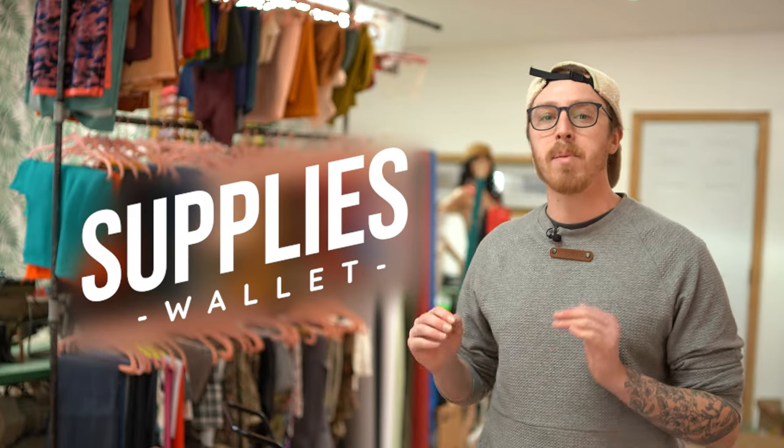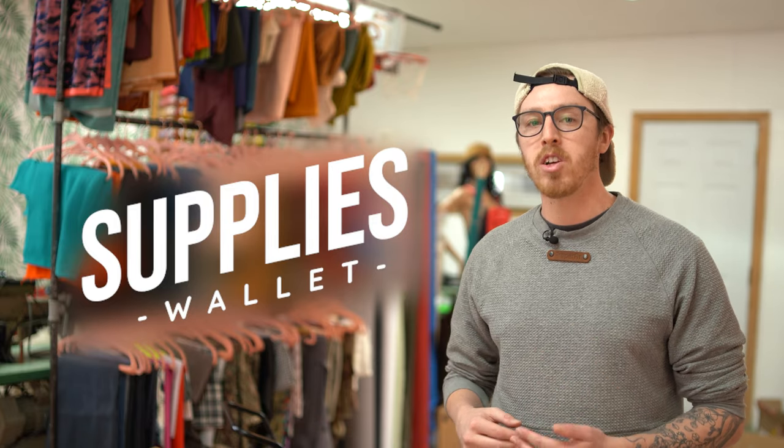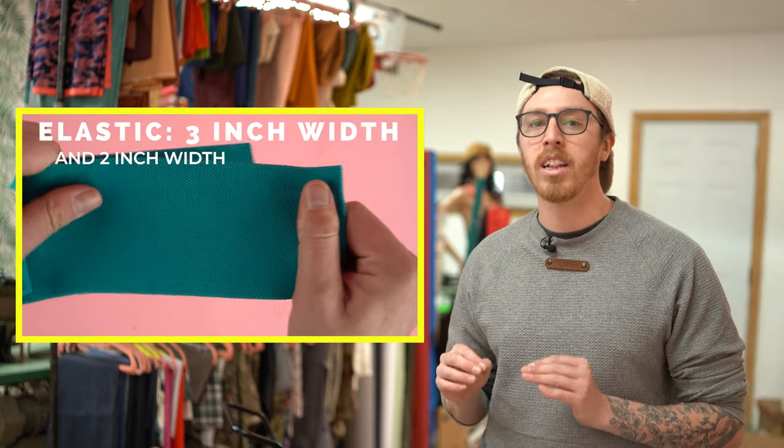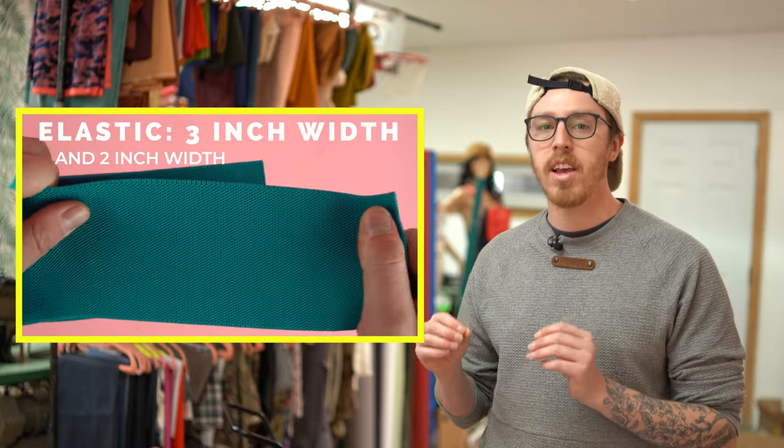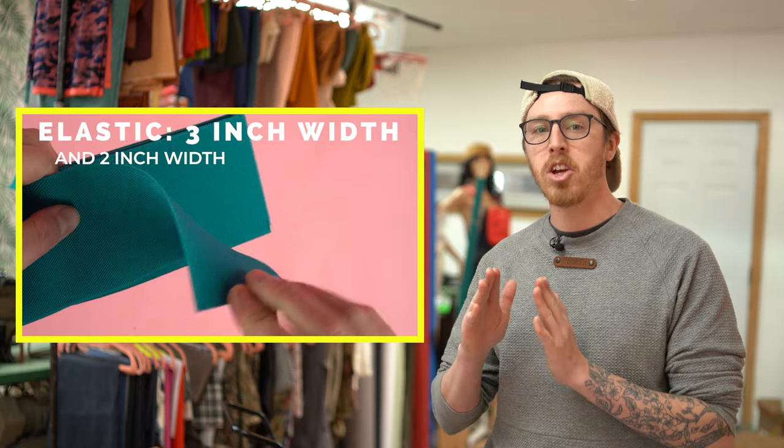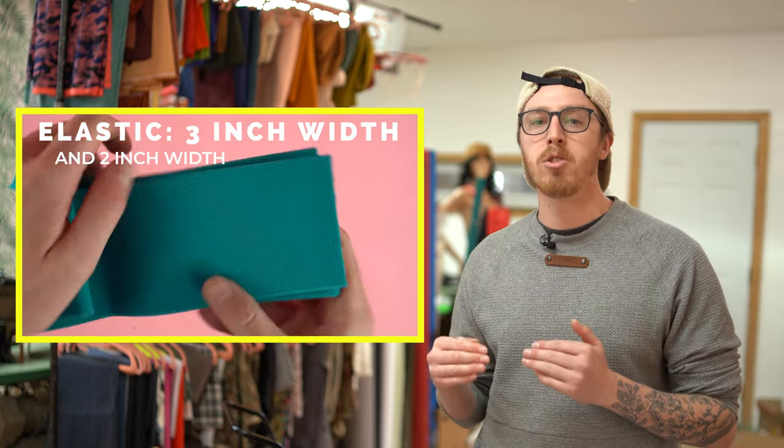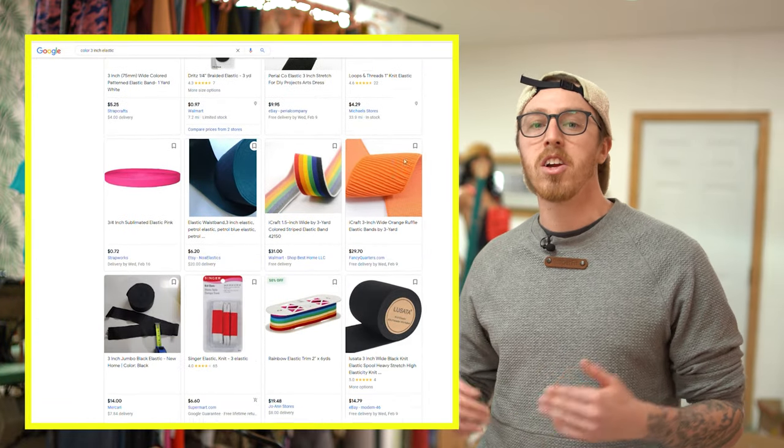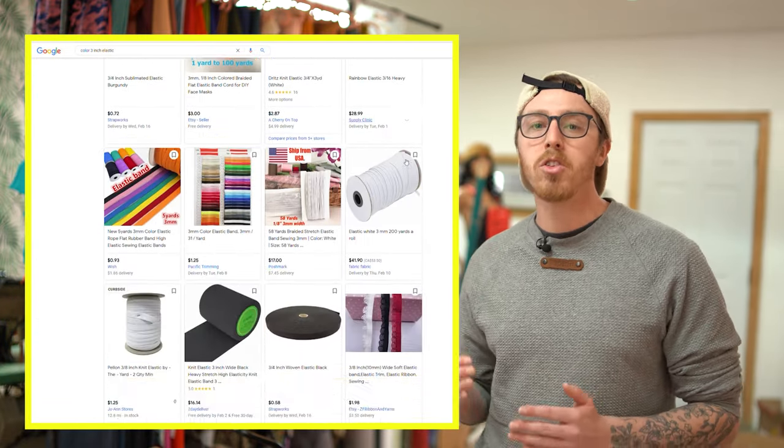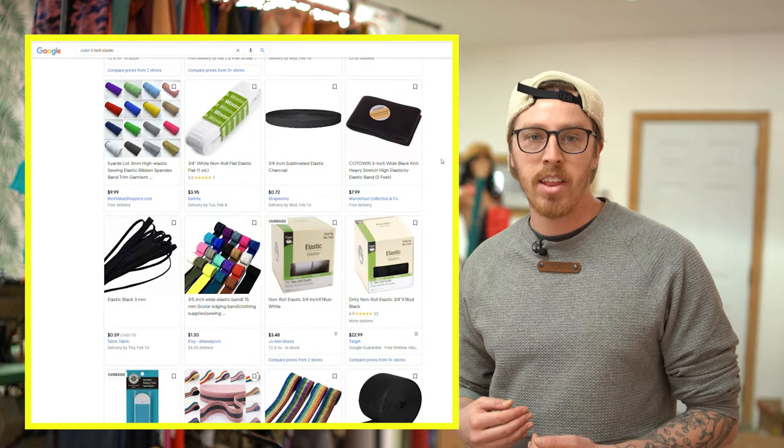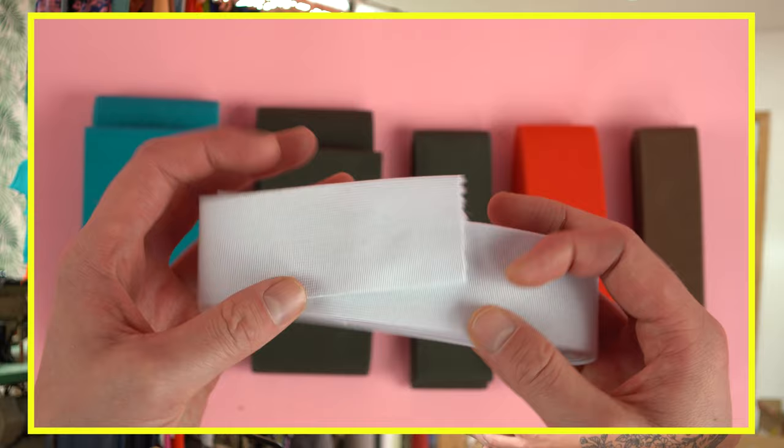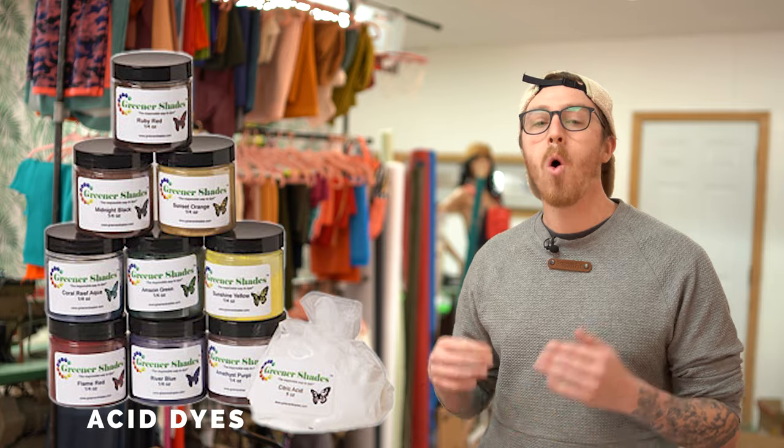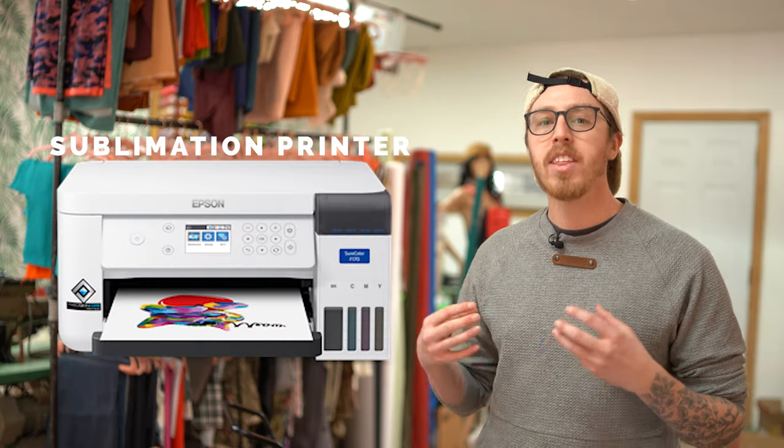Alright starting off with the supplies for the minimalist wallet. For the main fabric you're gonna need 3 inch elastic and it definitely has to be at least 3 inches because that's the perfect size so it doesn't go over the edges of your cards. And surprisingly for the 3 inch band elastic there's a lot of colors out there but you can also grab white elastic and dye it or do sublimation printing where you print off your graphic and heat press it onto your material.